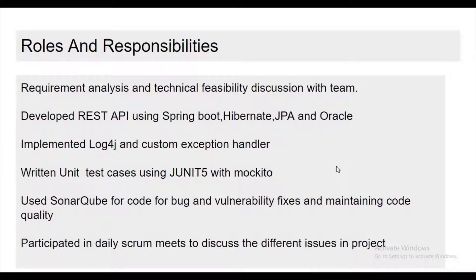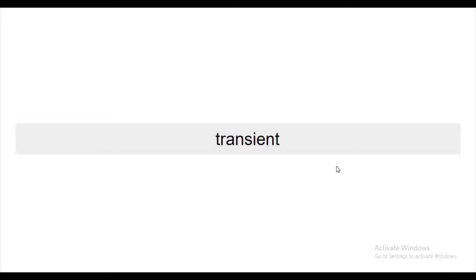The first interview question was about the transient keyword. Transient is a keyword used in serialization. Serialization is the process of converting an object into a byte stream. If you don't want one of your variables to be serialized, you declare it as transient — for example, 'transient int id'. That variable will then not be serialized.